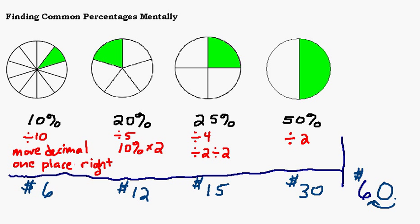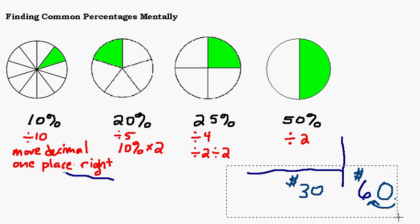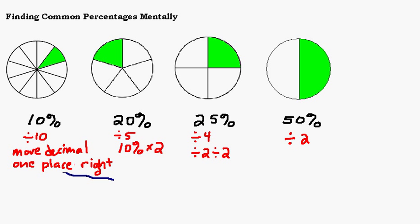Alright, let's try another one. I want to leave these shortcuts up here. So I'll give you a number and then I want you to find 10% of that number, 20%, 25%, and 50%. We'll start off with one that's not too hard. Let's try 80. Okay, what's 10% of 80, 20% of 80, 25% of 80, and 50% of 80. See if you can fill those in and figure that out.